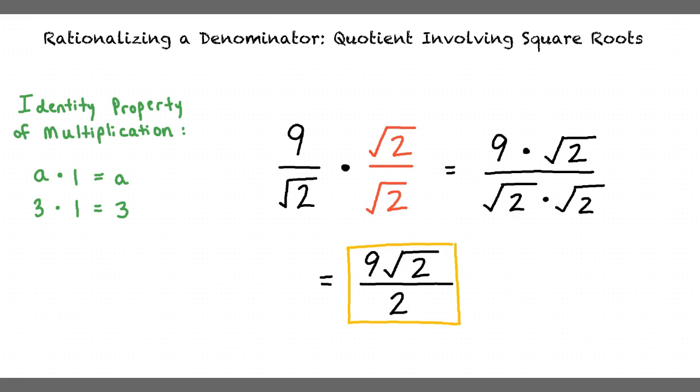Okay, so in order to rationalize the denominator containing a square root, we must multiply the denominator by a value from which we obtain an integer. According to the identity property of multiplication, we must multiply the denominator and the numerator by this value. This is the same as multiplying by 1, which does not change the value of the expression.